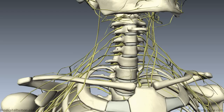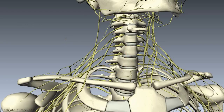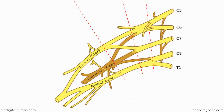Immediately exiting the intervertebral foramen, you have the parts of the brachial plexus which are referred to as the roots. We're going to switch over to a diagram which you'll see over and over again — this is used to explain and demonstrate the basic layout of the brachial plexus, and it's a diagram you need to familiarize yourself with.